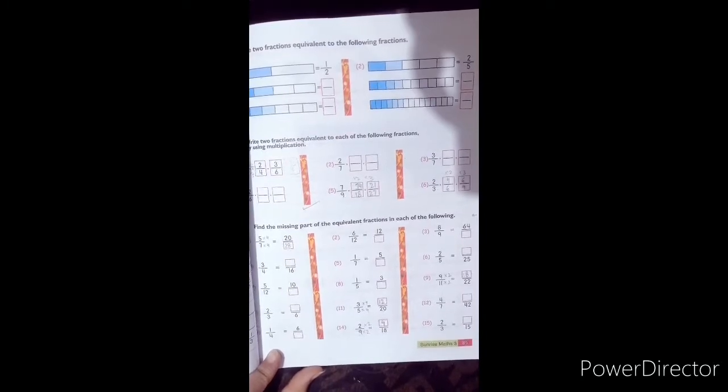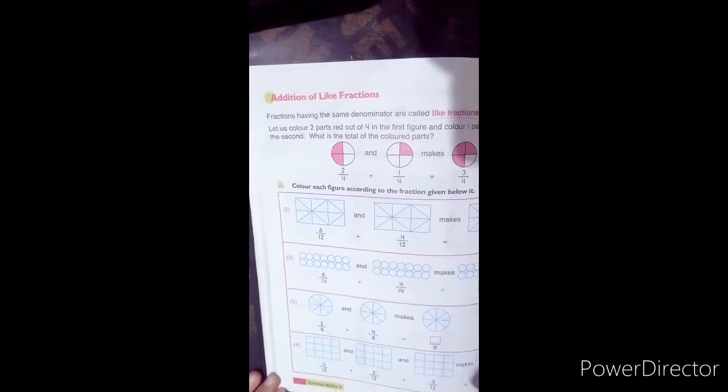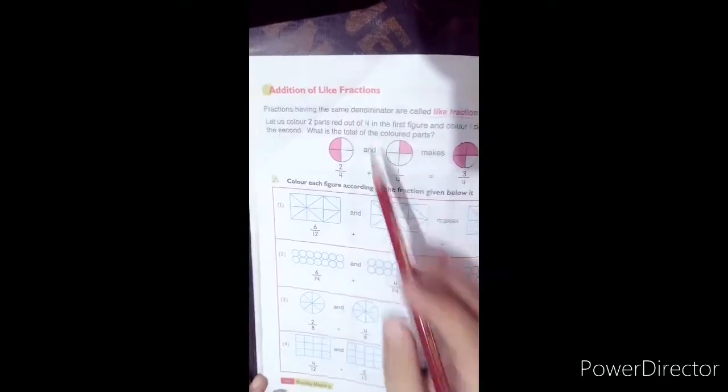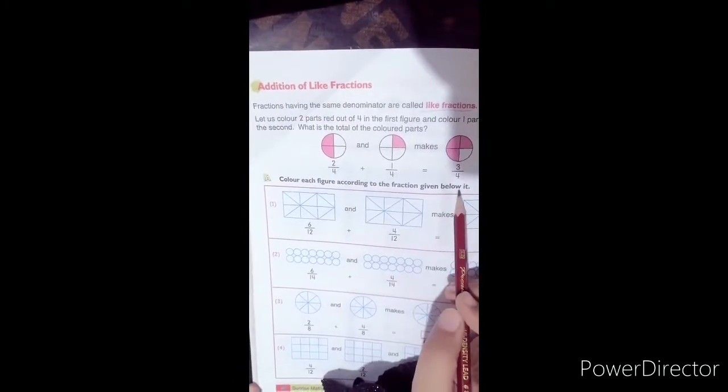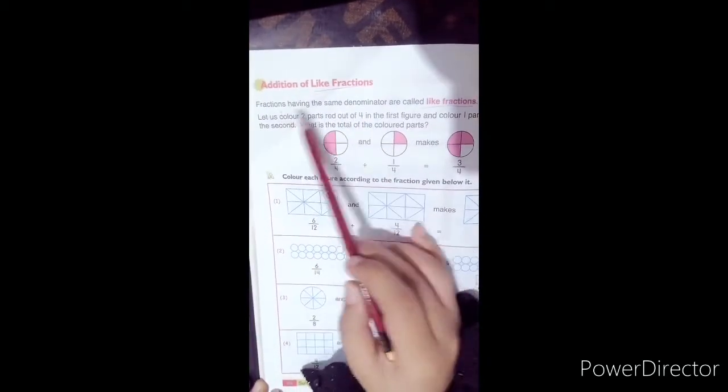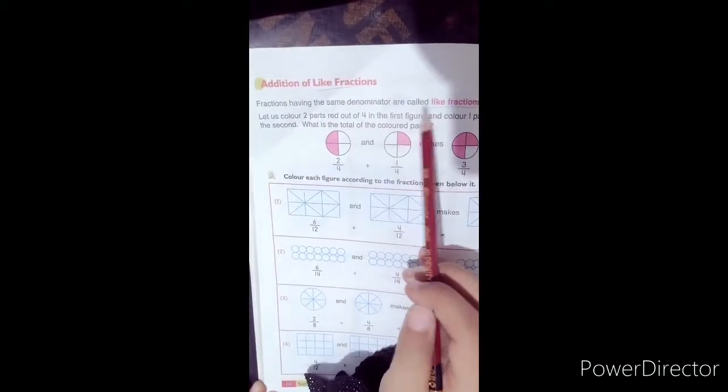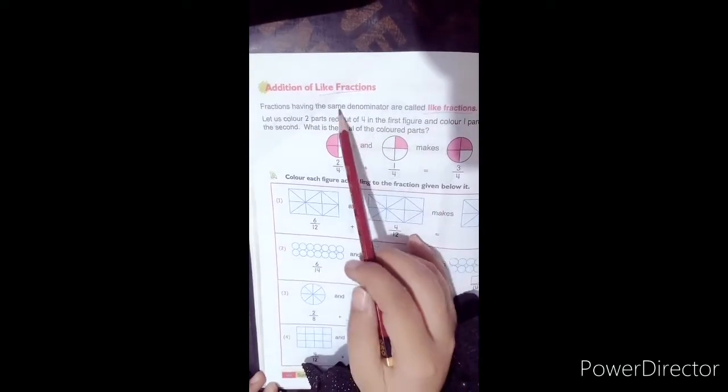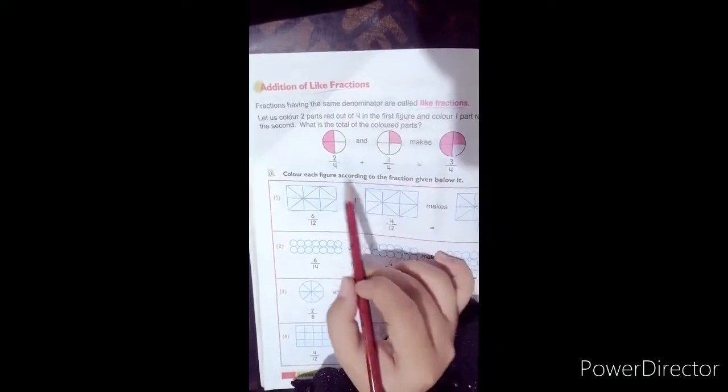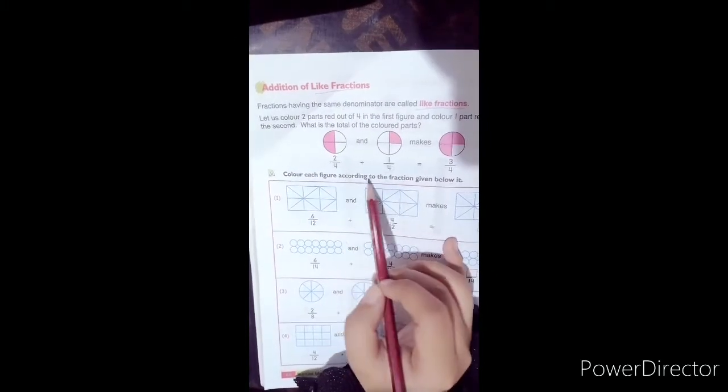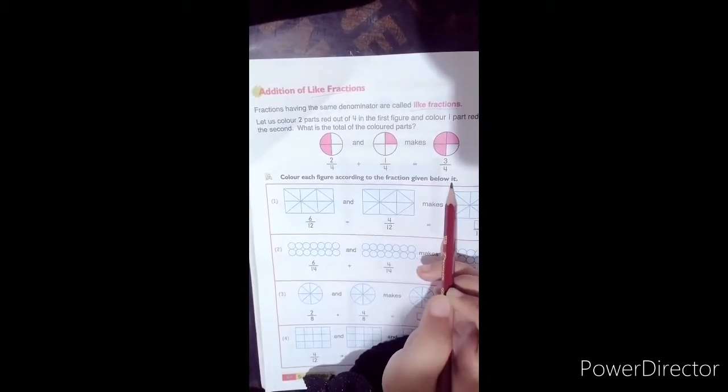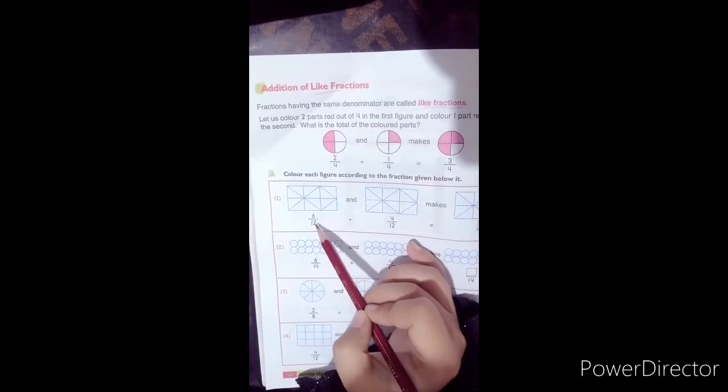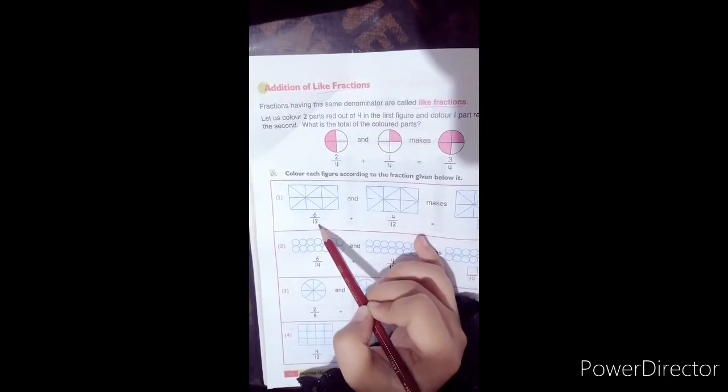Now we will move to page number 88. Addition of like fractions. Color each figure according to the fraction given. Like fractions are fractions having the same denominator. 6 by 12.